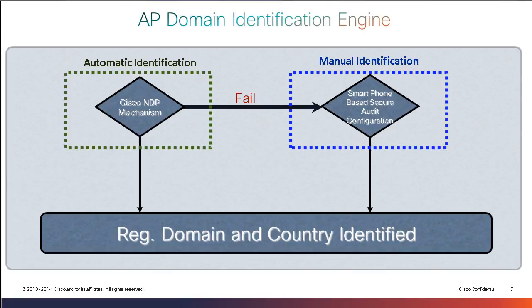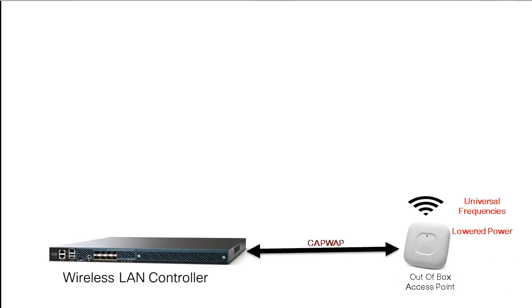To provision a country dynamically you have two choices: first, configure an access point and then boot up the other access points in the same neighborhood to dynamically provision the country via NDP over the air; or let your access point join a controller and use a cell phone to dynamically provision the country. The way this works is that an access point out of the box using the universal SKU is going to join a controller using CAPWAP as usual, but it's only going to broadcast an SSID on the 2.4 GHz band, not on 5 GHz.